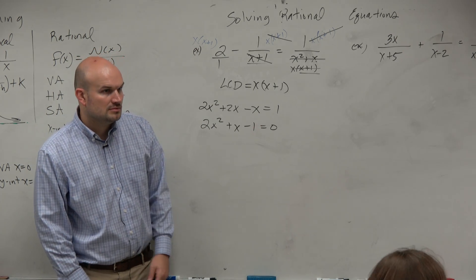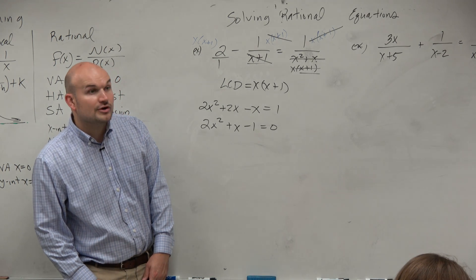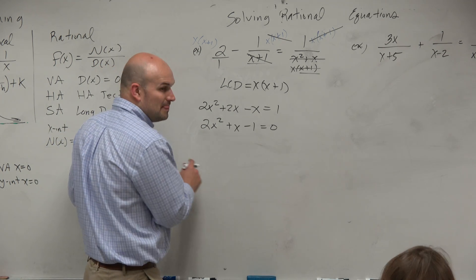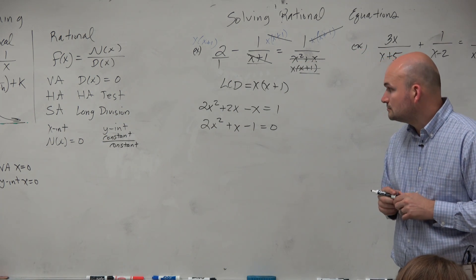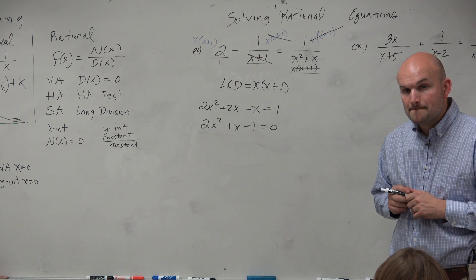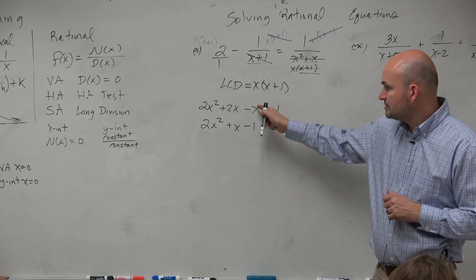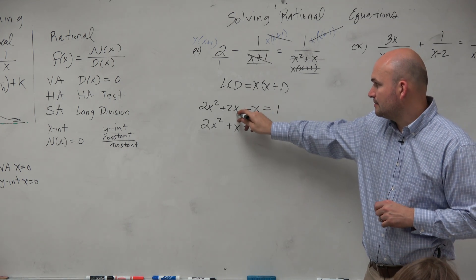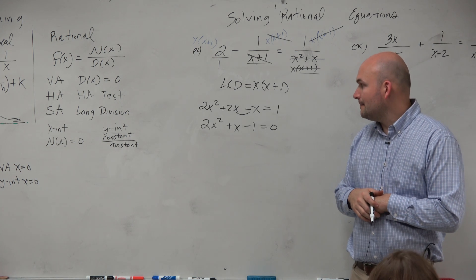So I have 2x squared plus x minus 1 equals 0. You get 2x squared plus 2x minus x equals 1, right? 2x squared plus x minus 1 equals 0. Yes, I subtracted the 1 to the other side and I combine these together. Those come to x and then you subtract the 1.